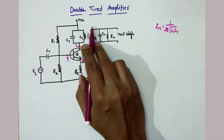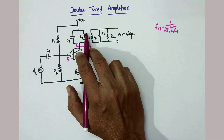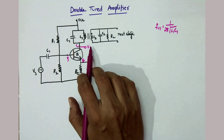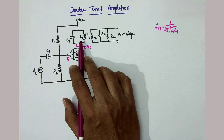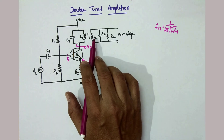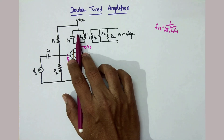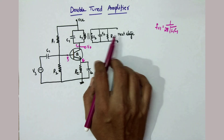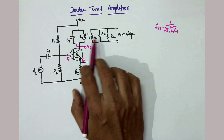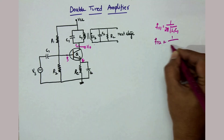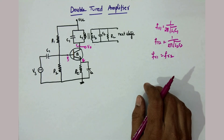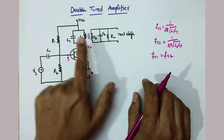That output voltage gets induced into the next tuned circuit because of mutual inductance, and the induced voltage gets connected to the next stage. The output voltage is maximum when the applied frequency equals the resonant frequency. We are connecting this output signal to the next stage through the transformer circuit, so the induced voltage in that circuit must equal the output voltage. To transfer the total output voltage as-is to the next stage, this second tuned circuit must resonate at the same frequency, that is FR2 = 1 by 2π√(L2C2), and these two resonant frequencies must be equal so that the output voltage gets exactly induced in the second circuit.